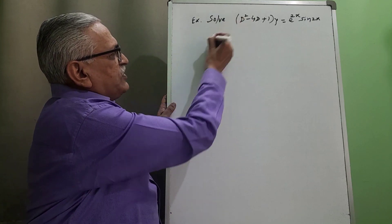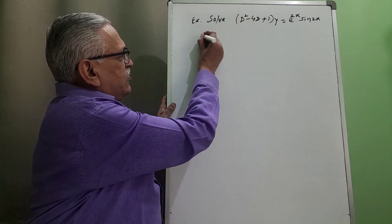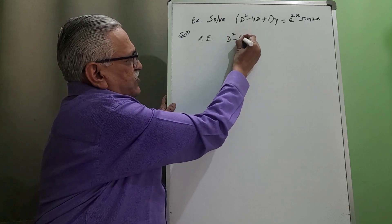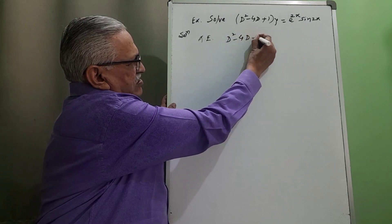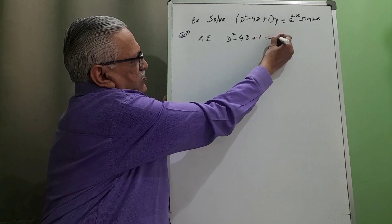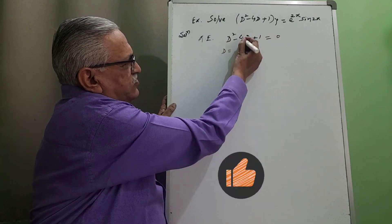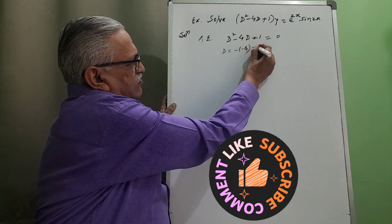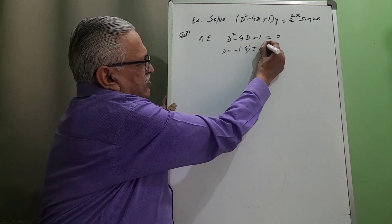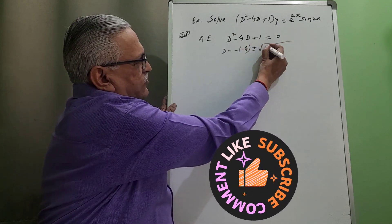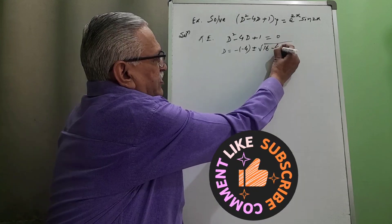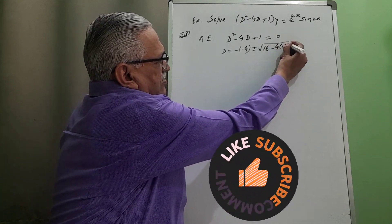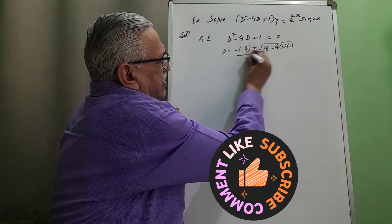For CF we write down the auxiliary equation: it is D squared minus 4D plus 1 is equal to 0. D is equal to minus of minus 4, plus or minus the square root of b squared minus 4ac, where b is 4, a is 1, and c is 1, divided by 2a.